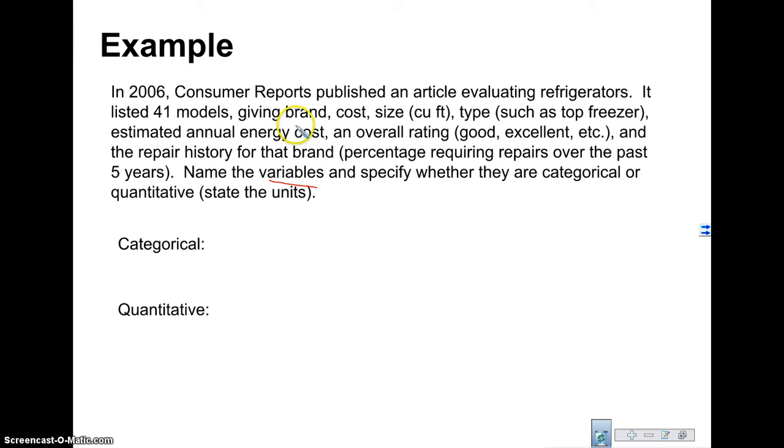So what information are we getting? We're getting the brand, the cost, the size, the type, the energy cost, the overall rating, and the repair history. So these are going to be our variables. So which of these variables are categorical? We've got to think which of them will we be given a word. So the brand, is it Whirlpool, is it Frigidaire? So this is a categorical variable. Cost would be quantitative because we know how much something costs, $25, $3,000. The size was given in cubic feet. So cubic feet is numerical. So we're going to say that's size.